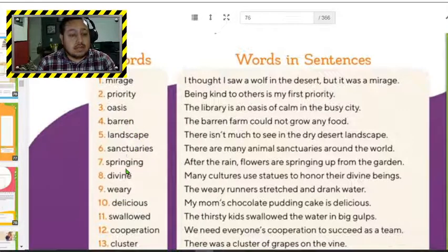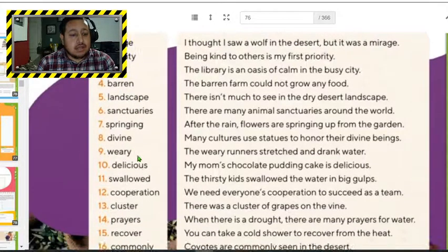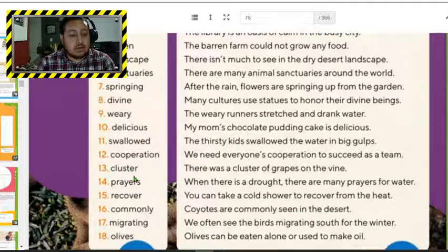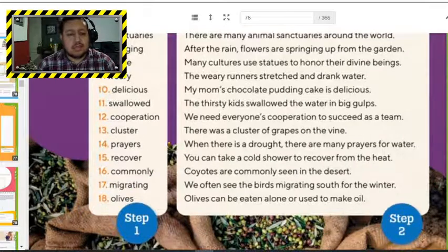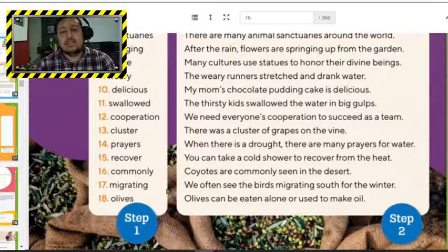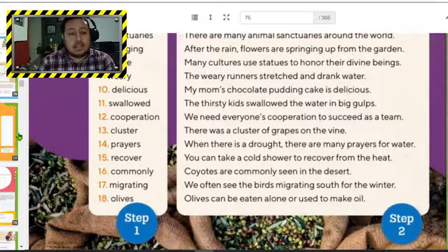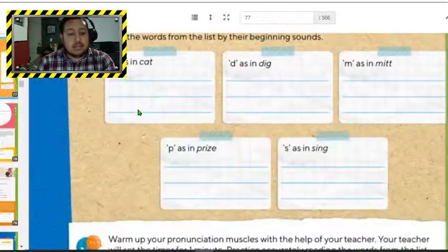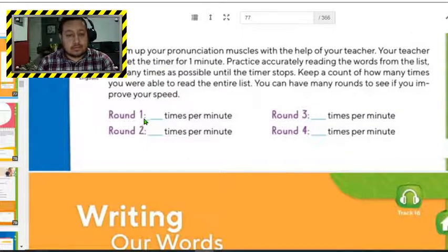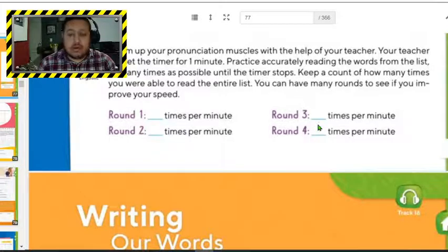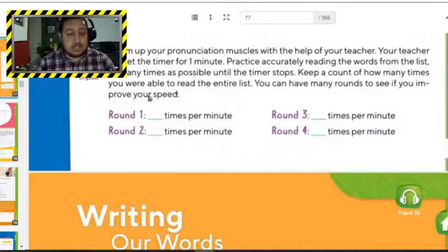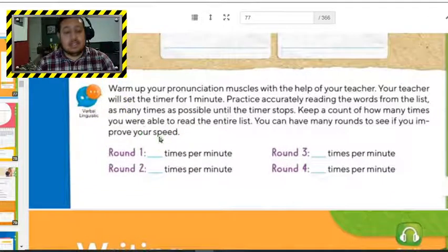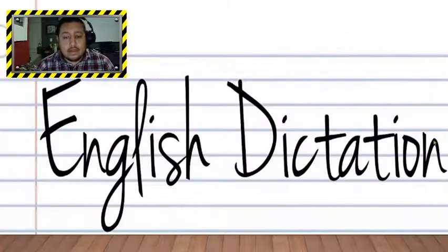sanctuary, springing, divine, wherever, delicious, swallow, cooperation, cluster, prayer, recover, commonly, migrating, olives. I think that was like 20 seconds. Fueron como 20 segundos. Entonces, continúas. ¿Cuántas veces puedes repetir la lista en un minuto? Y después les pones aquí. ¿Cuántas palabras repetiste al minuto? So this, you need to do round two, round three, round four. Y vamos a ver si en el round cuatro mejoras. Sí, haces más palabras de las que hiciste en el round número uno.